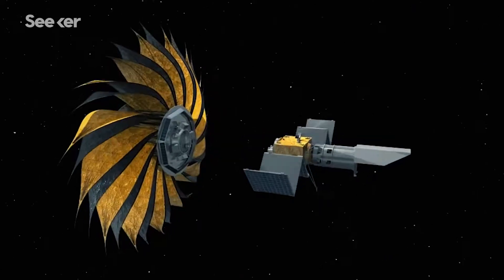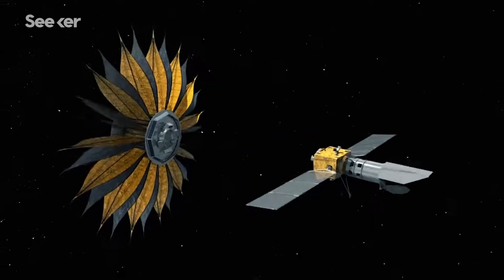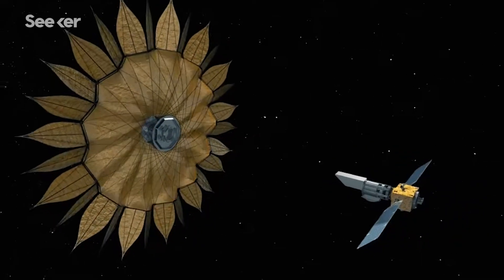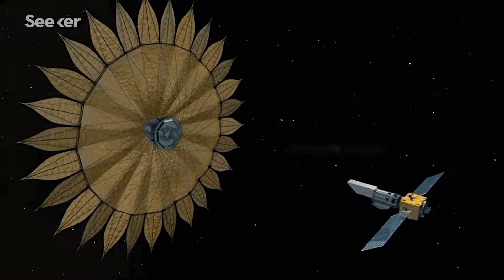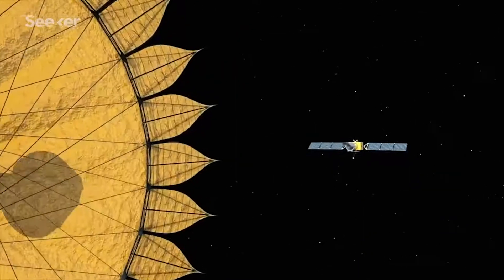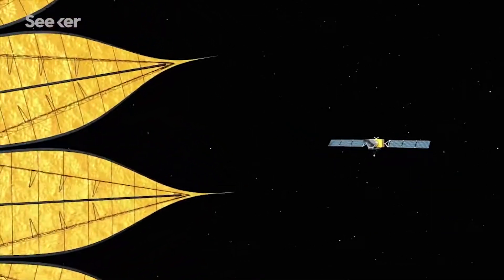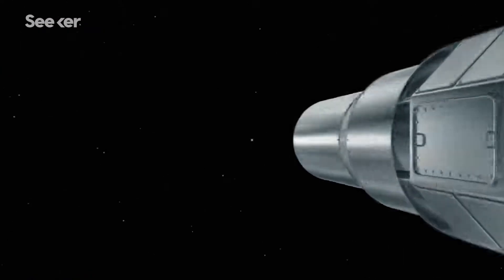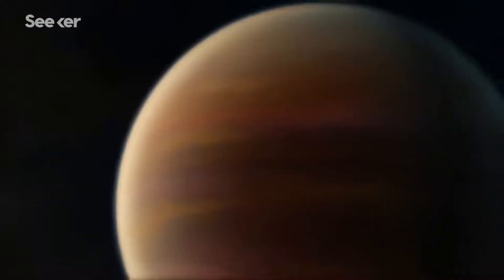This giant space flower may seem simple in design, but not in implementation. The starshade will need to unfold with millimeter accuracy. Once opened, thrusters will move the craft through space, positioning the starshade between the star and the space telescope. With the star now being shaded, the telescope can image the planet in detail to find out whether conditions for life exist.